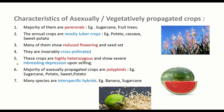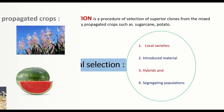Many asexually propagated species are interspecific hybrids — meaning hybridization between two different species of crop plants. Coming to what is clonal selection: it is a procedure of selection of superior clones from a mixed population of asexually propagated crops such as sugarcane and potato. It is a process of selecting superior clones from a heterogeneous mixture of asexually propagated crop plants.